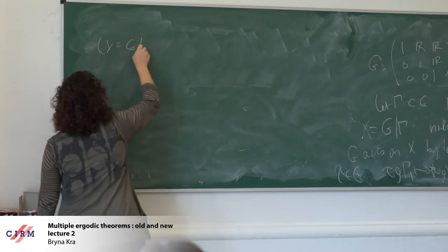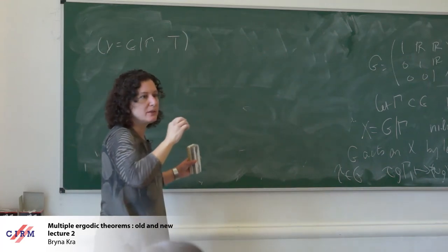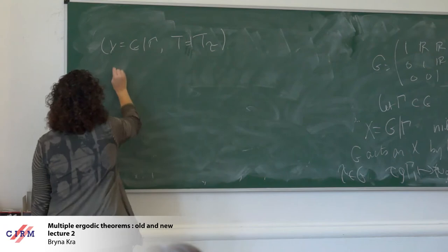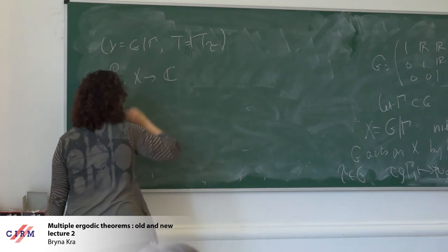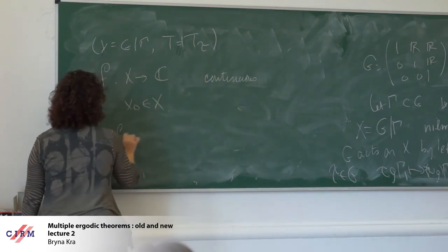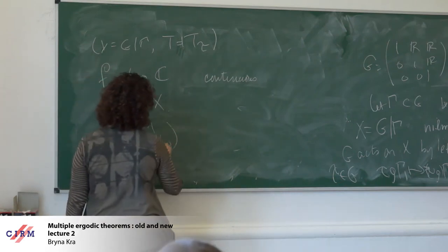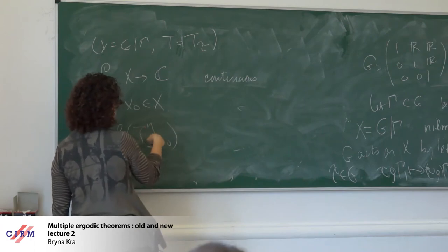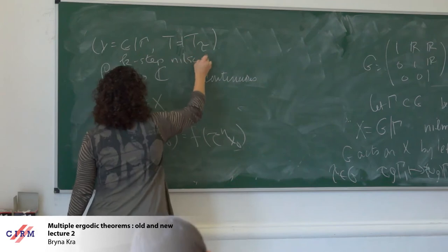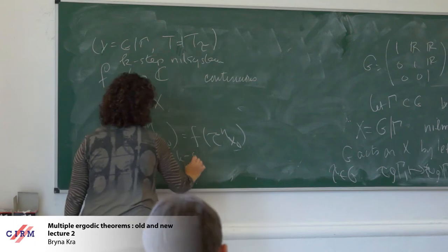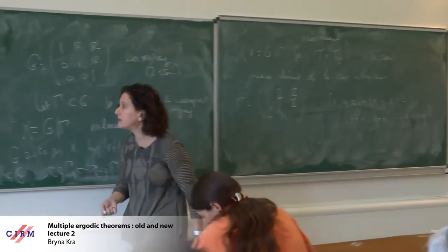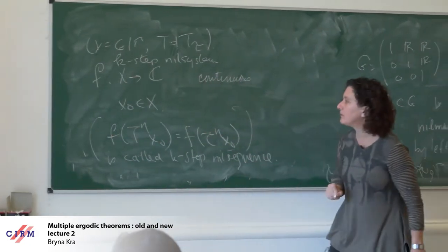If I have a nil system, written as G mod Gamma with transformation T equal to left multiplication by tau, and I take a continuous complex-valued function and fix some x_0 and evaluate the function on this orbit — f(T^n x_0) — this is what is called a k-step nil sequence.